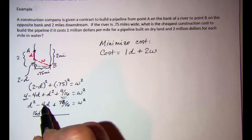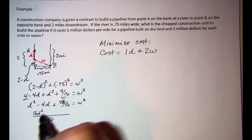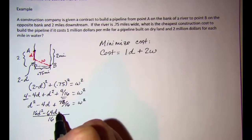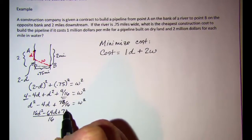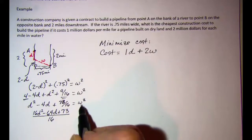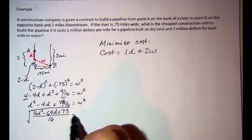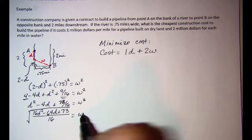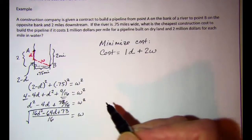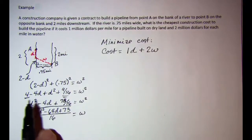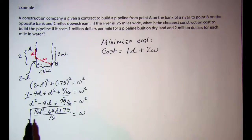This gives us 16D² − 64D + 73 under the square root, which is our expression for W. Normally we'd write plus or minus, but since we're dealing with actual distances, we only use the positive square root.